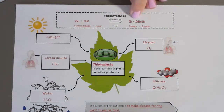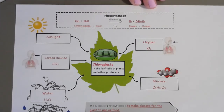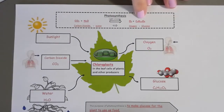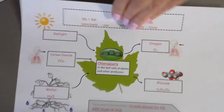We eat plants or other animals and get this food, which we then break down as energy. Plants are the basis for our food chain — without plants, we would not be able to live. Without photosynthesis, there would be no life on earth. Plants go through photosynthesis, make glucose and oxygen, and release that oxygen for us to breathe.